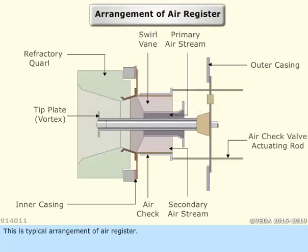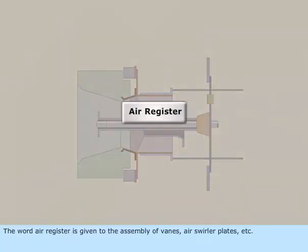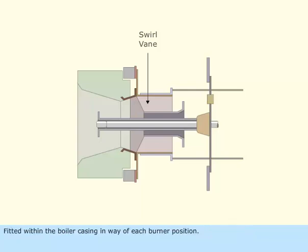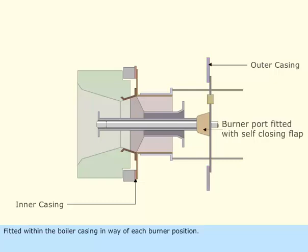This is typical arrangement of air register. The word air register is given to the assembly of vanes, air swirler plates, and so on, fitted within the boiler casing in way of each burner position.